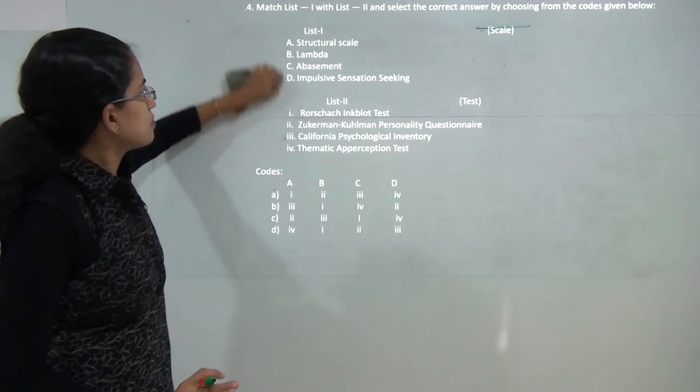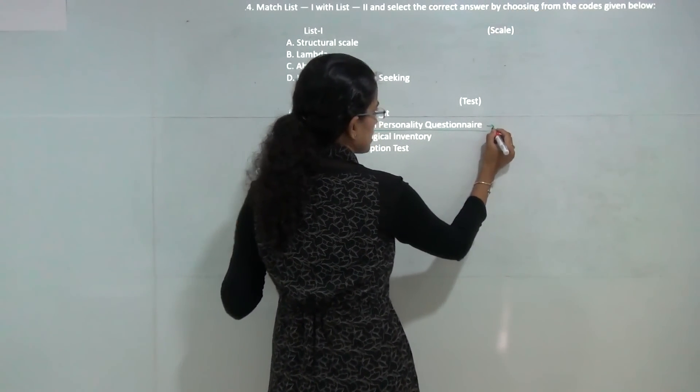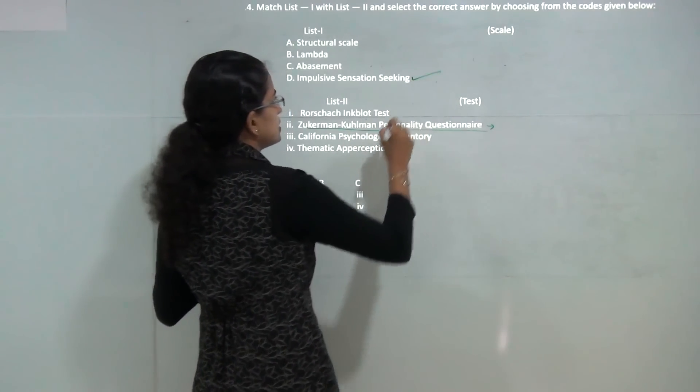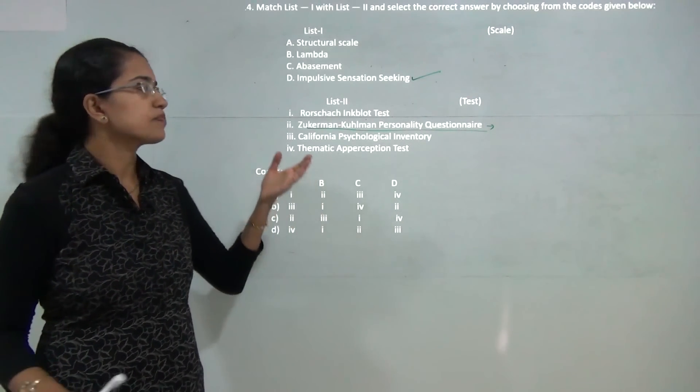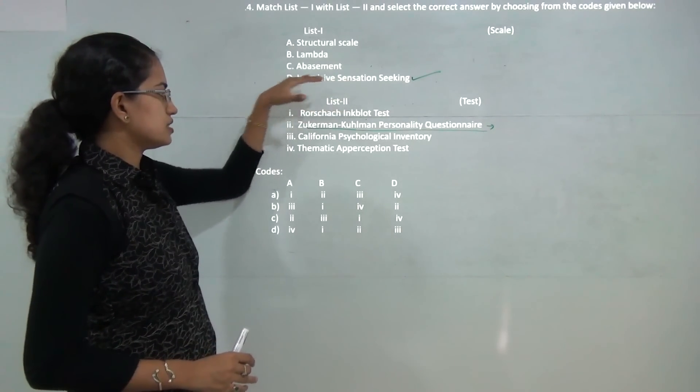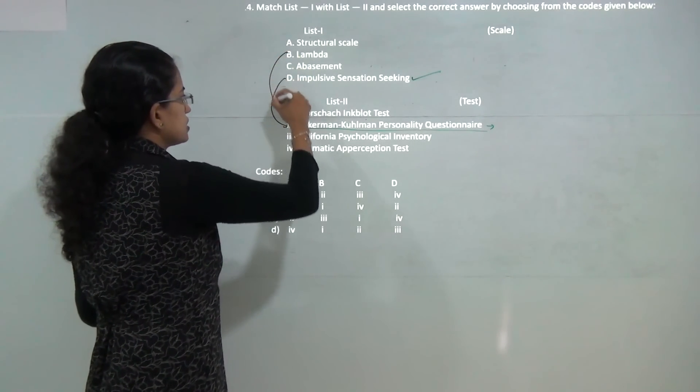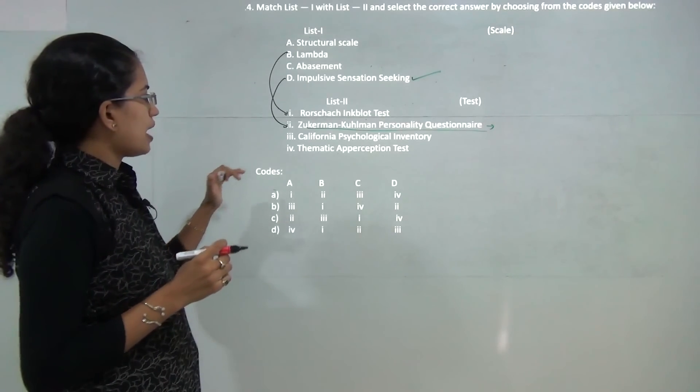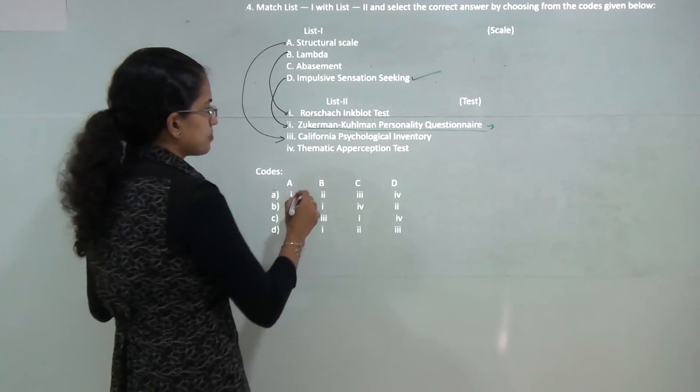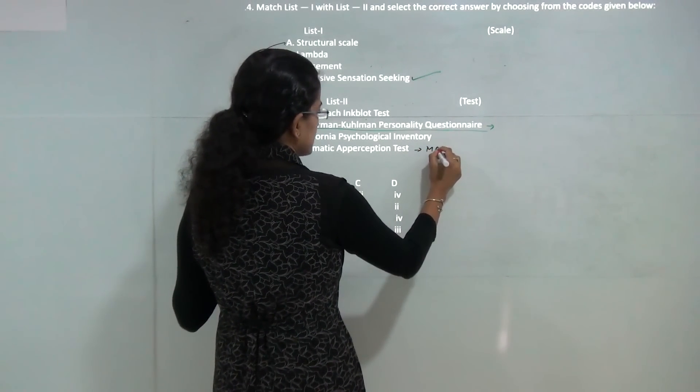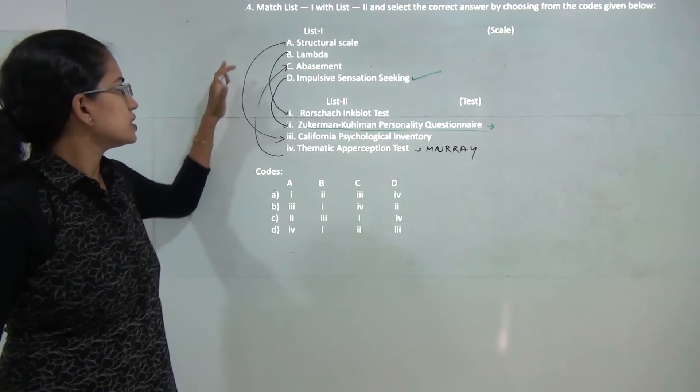Next: you have to match the scales with the test. The Zuckerman-Kuhlman personality questionnaire includes five scales. The most important is impulsive sensation seeking. Besides that it includes sociability, neuroticism, and aggressiveness. Then you have Rorschach inkblot test that includes lambda scale. Then you have the California Psychological Inventory that talks about the structural scale. And finally, the Thematic Apperception Test given by Murray, the TAT analysis, talks about abasement as one of the psychogenic needs that Murray described. So these are the correct matches.